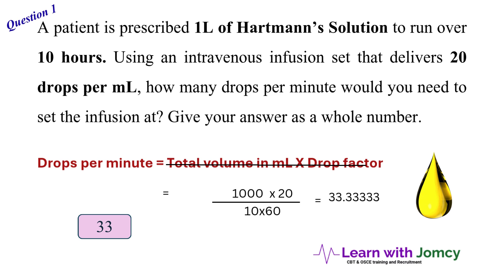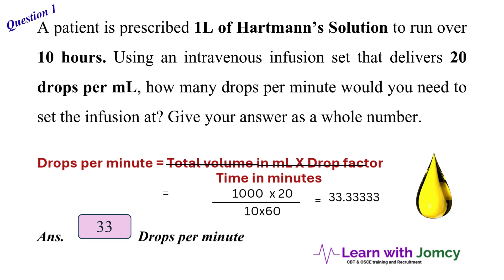The formula is: drops per minute equals total volume in milliliters multiplied by drop factor, divided by time in minutes. In our question, the volume is prescribed in liters, so we convert: 1 liter equals 1000 milliliters. So we have 1000 multiplied by the drop factor, which is 20 drops per ml.